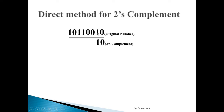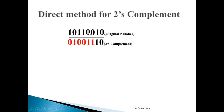Once the 1 is found, after that every remaining bit is reverted — 0 is changed to 1 and 1 is changed to 0 — all the way up to the MSB.